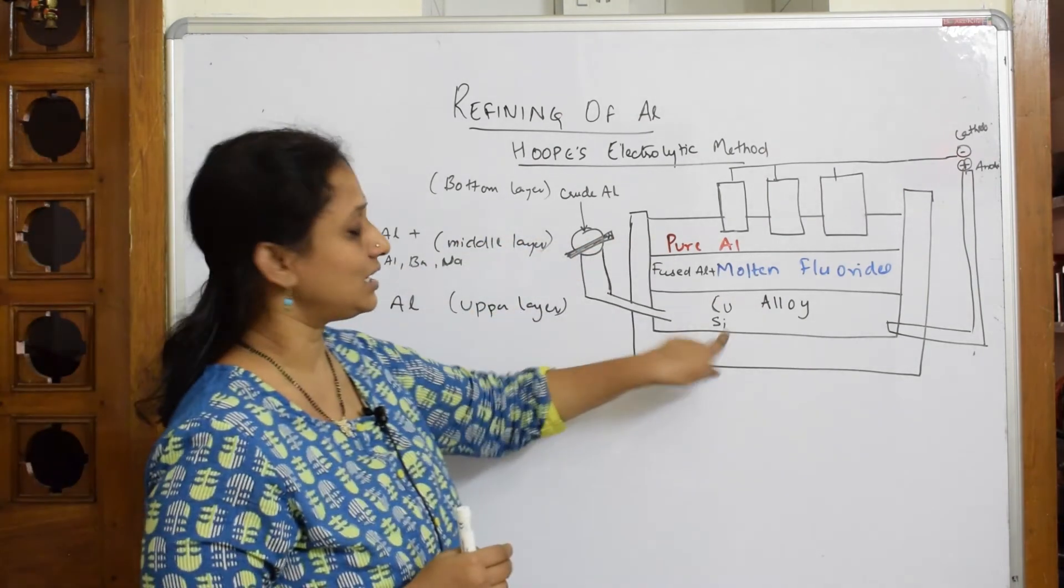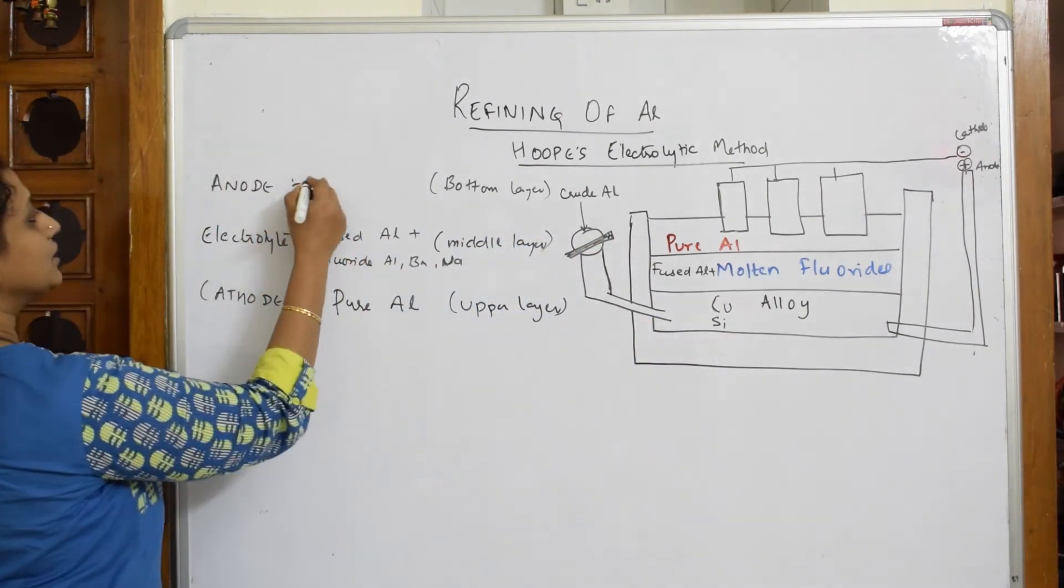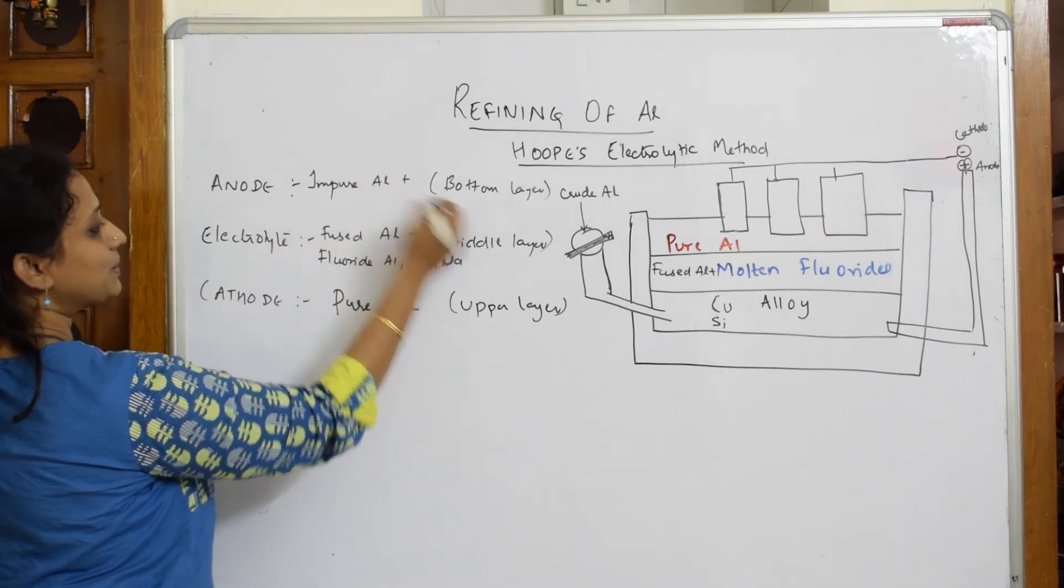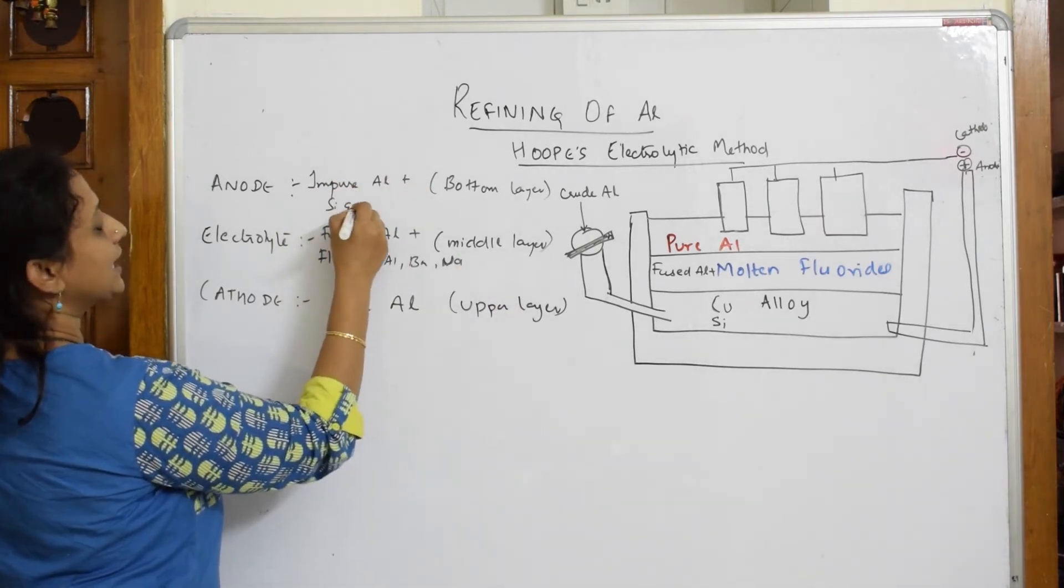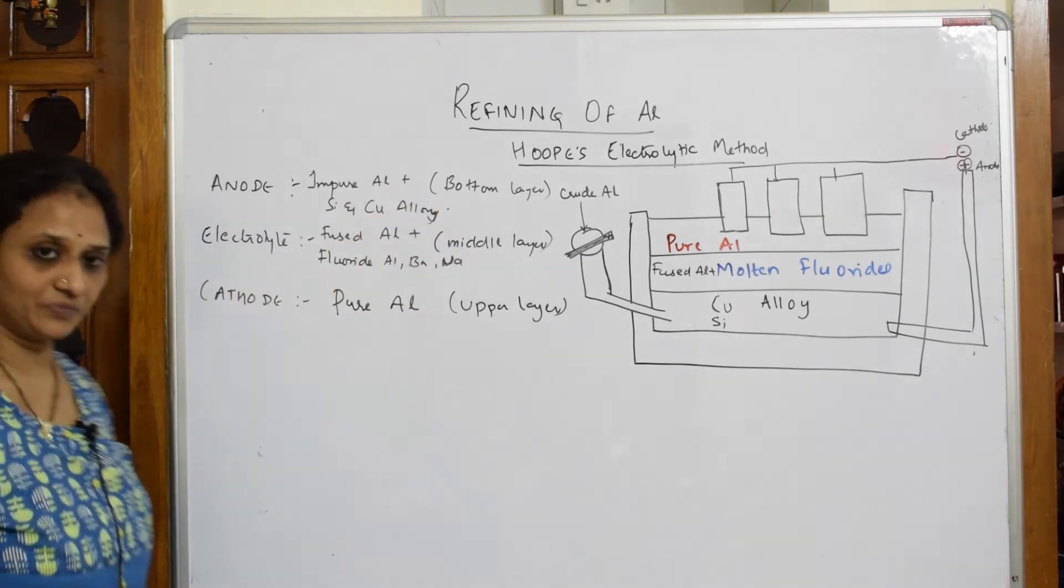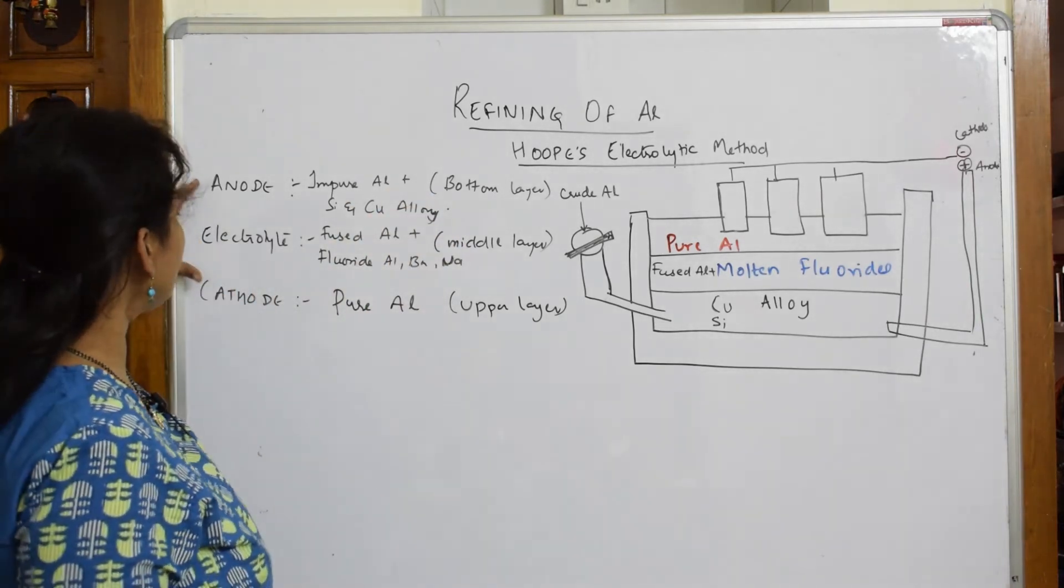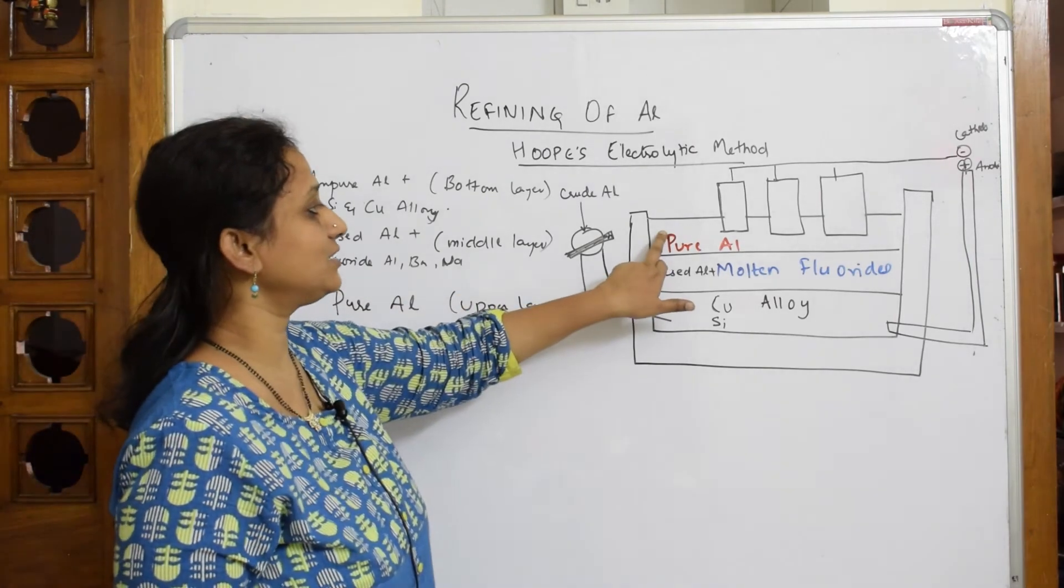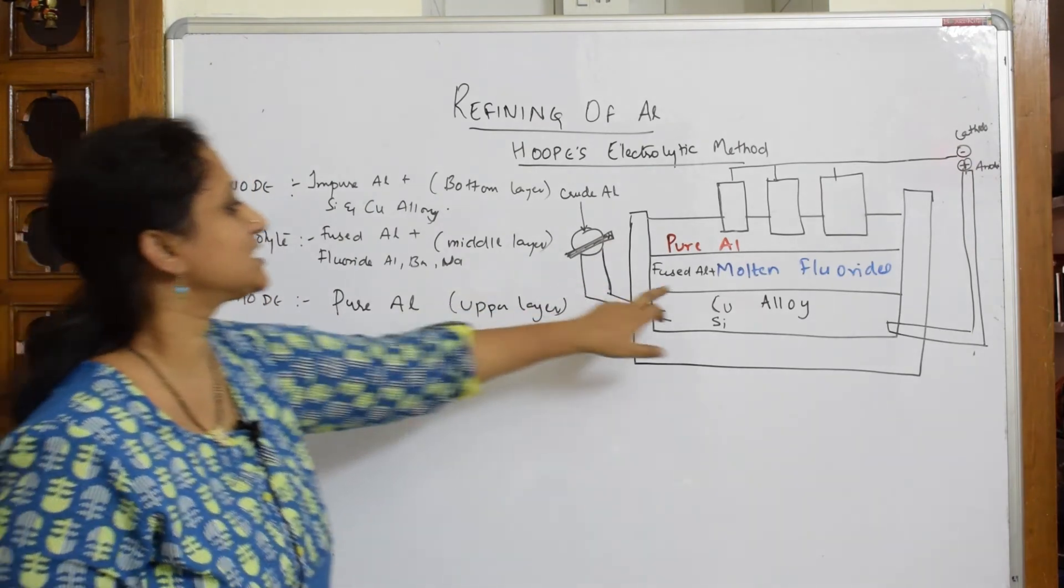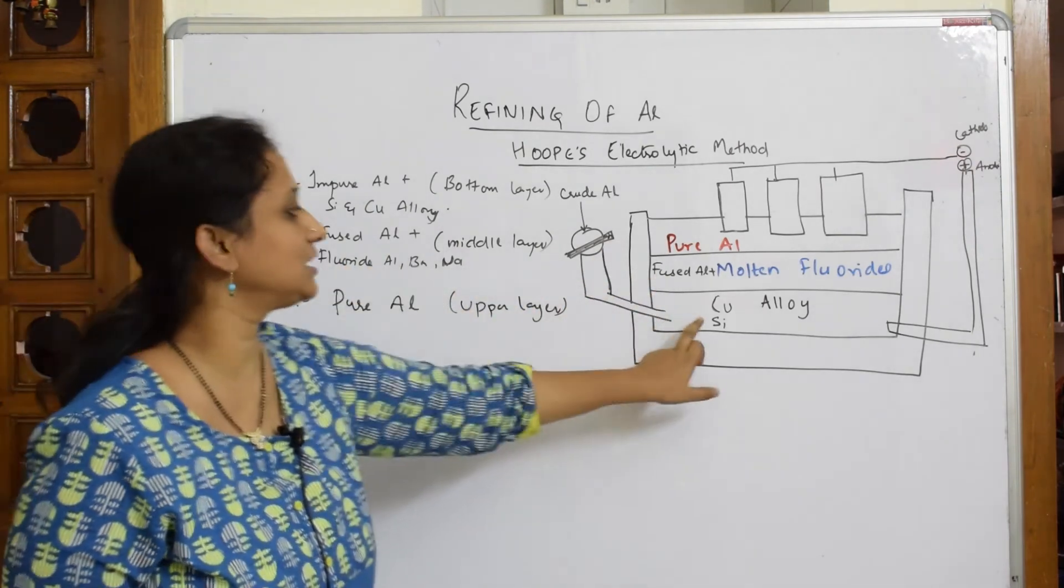When I come down to the last layer, you have three important things: pure aluminum metal plus you have silicon and copper alloy also. Right. Now, so once again you have three layers. Yes, first layer anodic layer, sorry, cathodic layer, first layer cathodic layer.